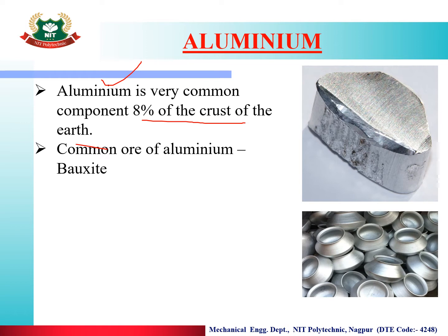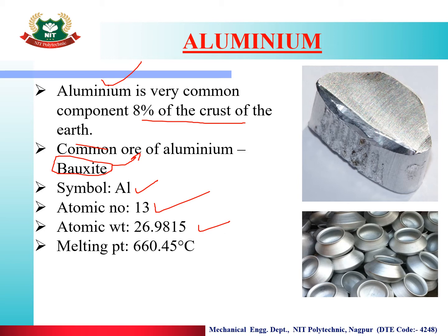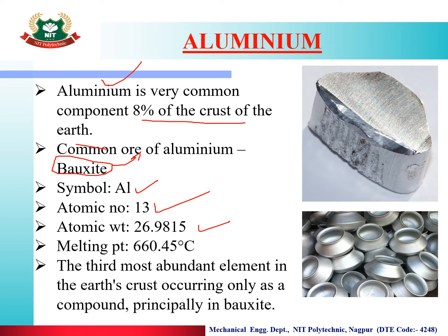Aluminium is extracted from bauxite. Its atomic number is 13, atomic weight is 26.9815, and melting point is 660.45 degrees centigrade. It is the third most abundant element in the earth's crust, occurring only as a compound, principally in bauxite.